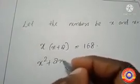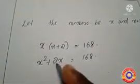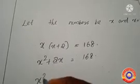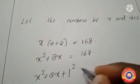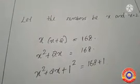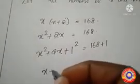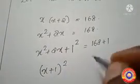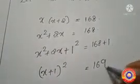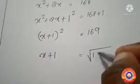We have to take their product, that means x(x + 2) = 168. Next, open the bracket using x, so we get x² + 2x = 168. Next we have to complete the equation by adding the square of half of the coefficient of x on both sides, so x² + 2x + 1² = 168 + 1.